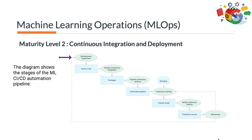Stage 1 is development and experimentation: you iteratively try out new machine learning algorithms and new modeling, where the experiment steps are orchestrated. The output of this stage is the source code of the machine learning pipeline steps, which are then pushed to a source repository, for example to GitHub.